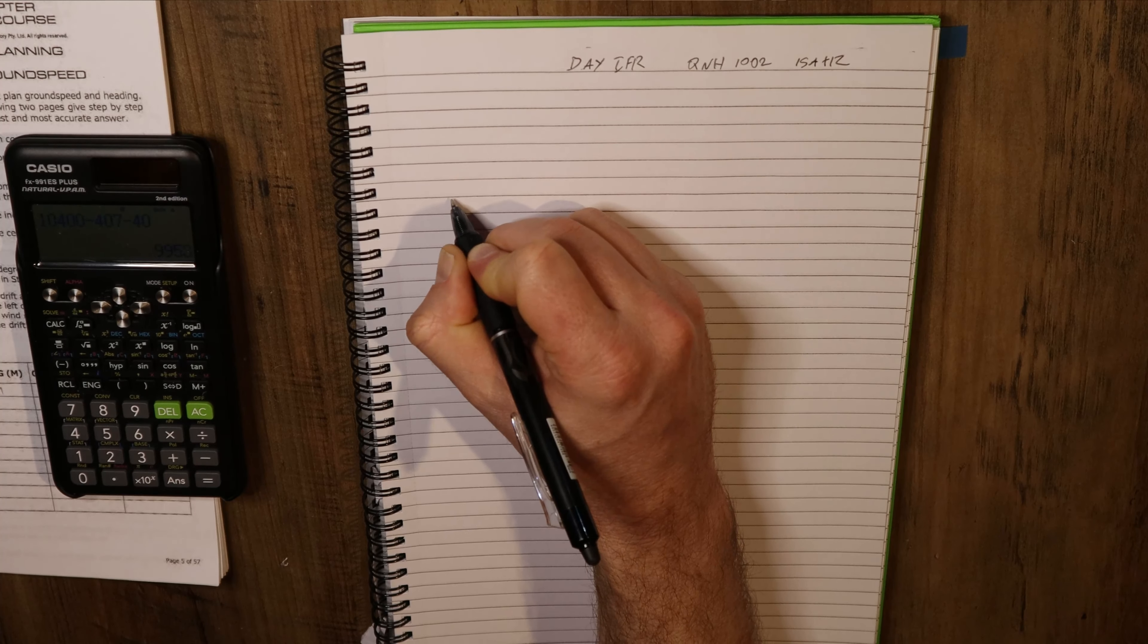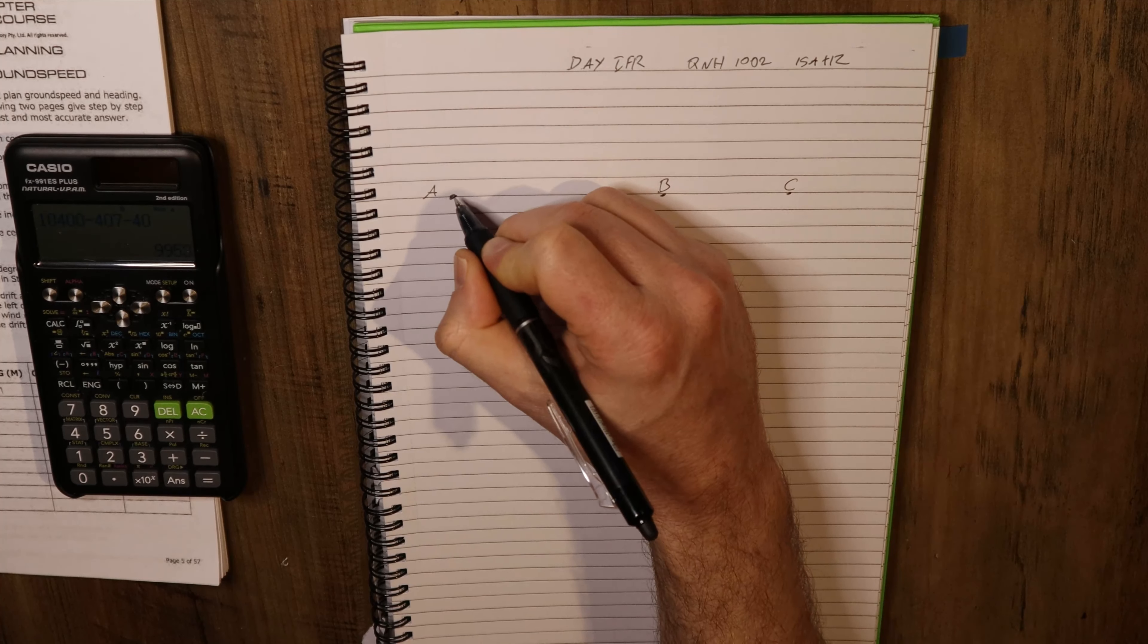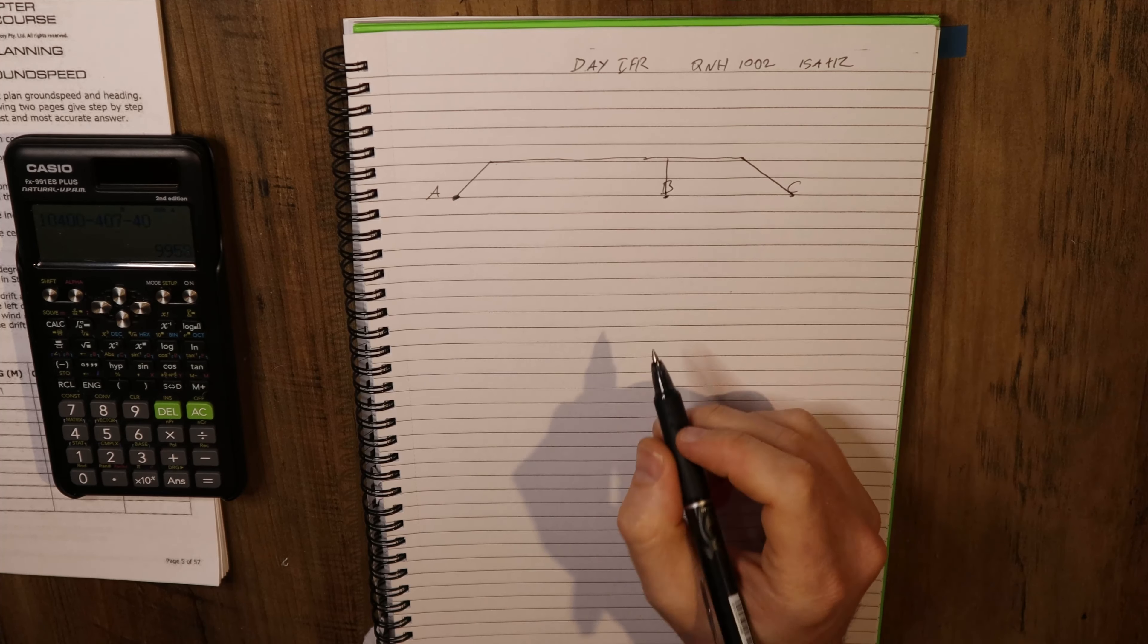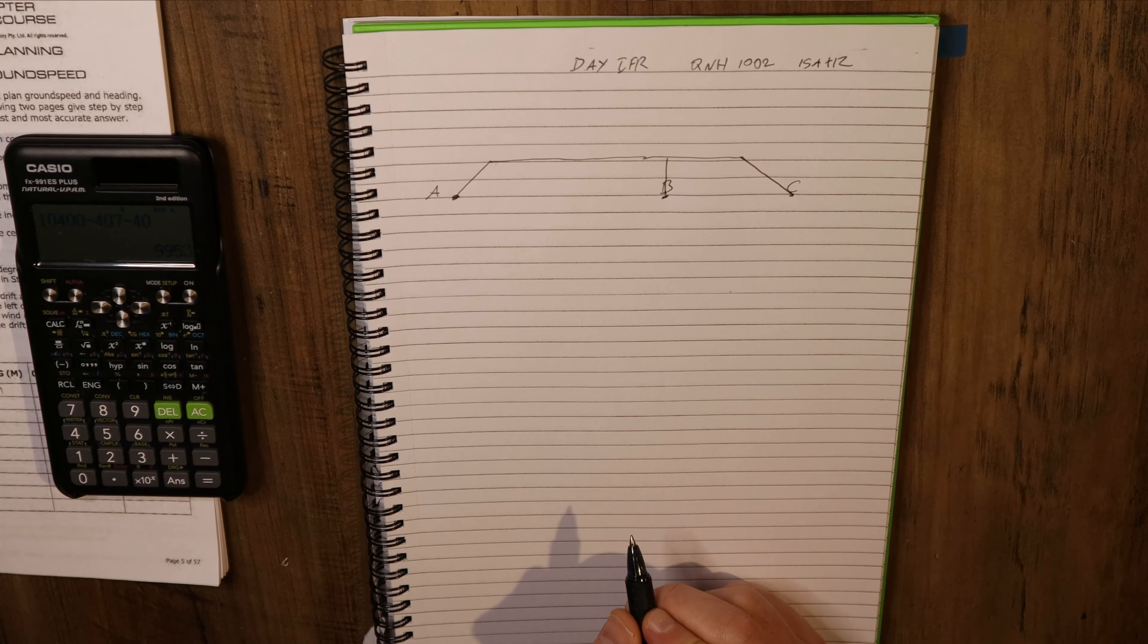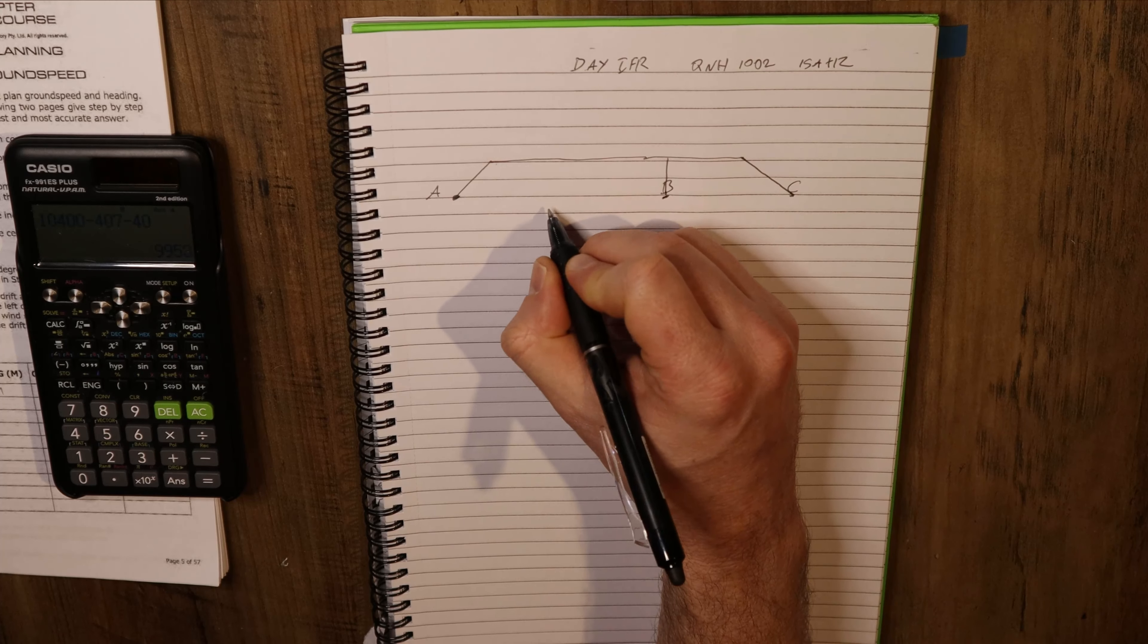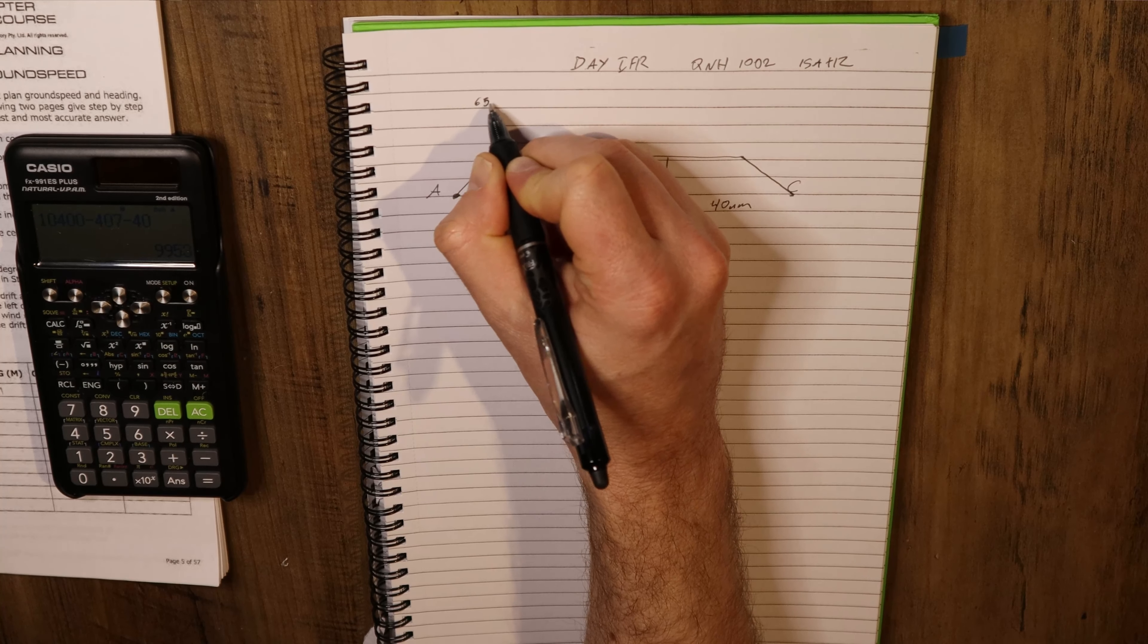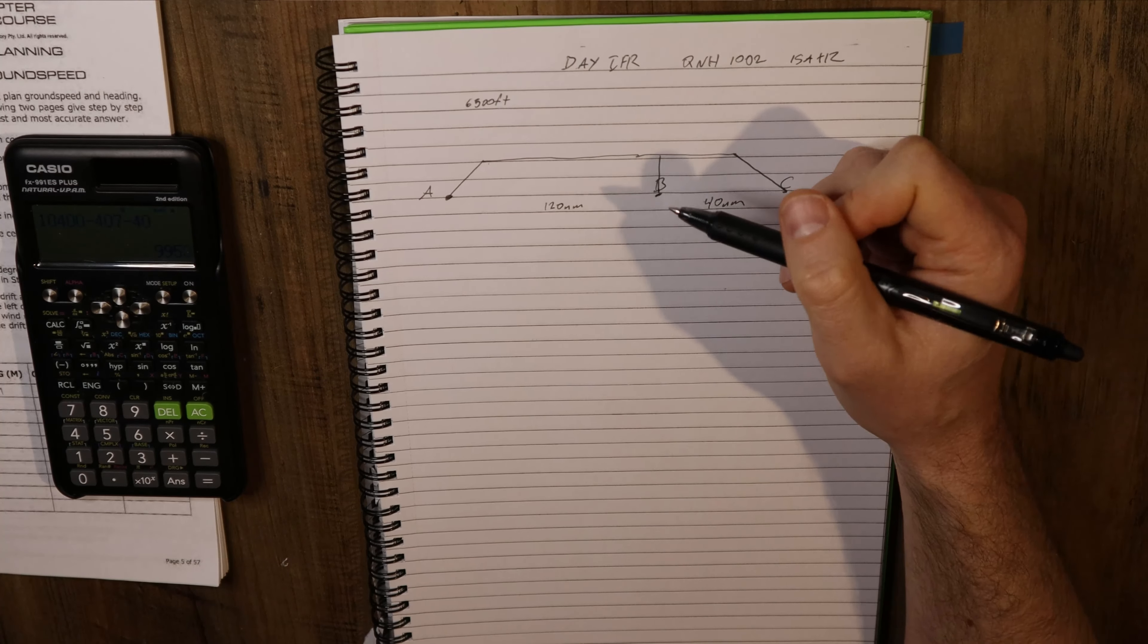Now we start drawing our plan. This is the way I like to draw it out. We're going from A to B to C. We're climbing, potentially there's a descent here. The other thing I mention is that there is a requirement to do an IFR approach at B. This distance here was 120 nautical miles and this distance here was 40 nautical miles. Our altitude was 6500 feet.